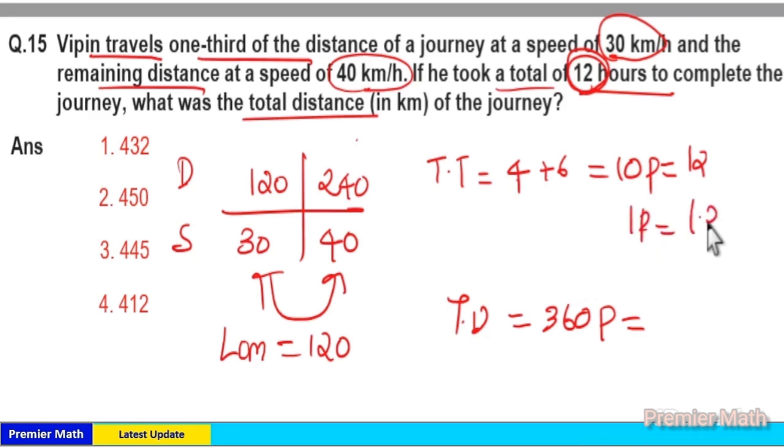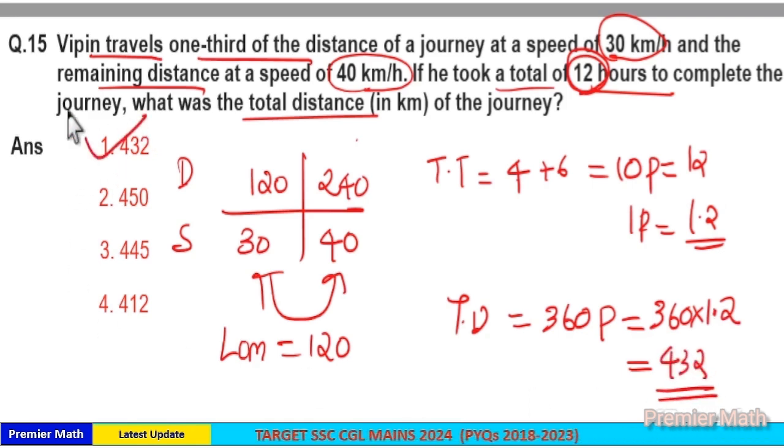Which means here one part is equal to 1.2 hours. Then 360 parts is the total distance, so 360 times 1.2 is the total distance, which is equal to 360 plus 72, which is 432. Option 1 is your answer.